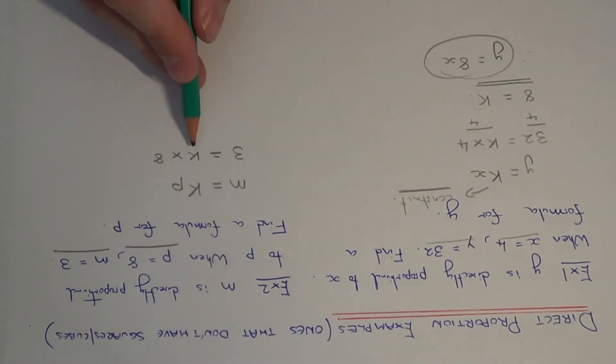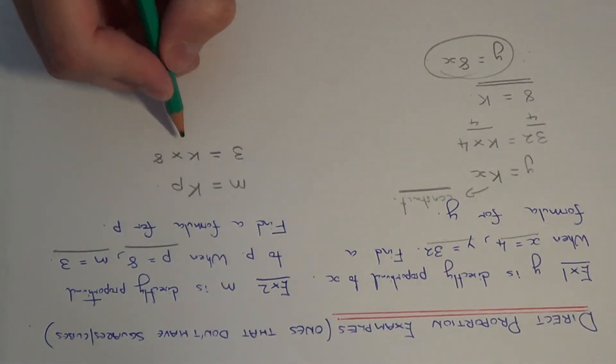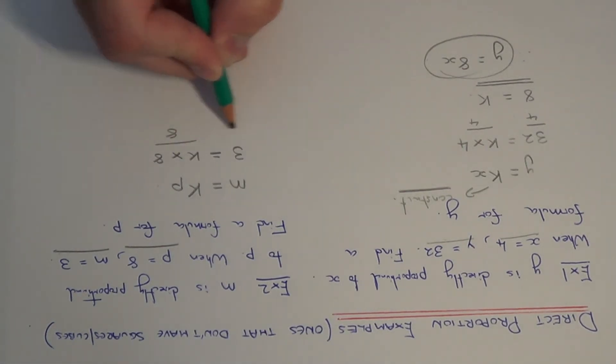So if we solve this equation to work out k, so k is being multiplied by 8. So the opposite is to divide both sides by 8. So 3 divided by 8, well we can't really work that out, so let's just leave it as 3 eighths. And this will be equal to k.